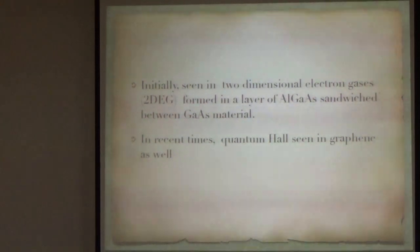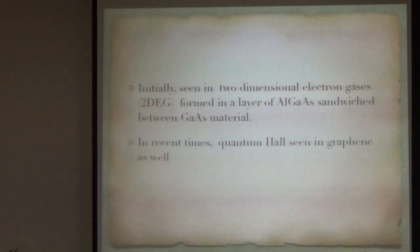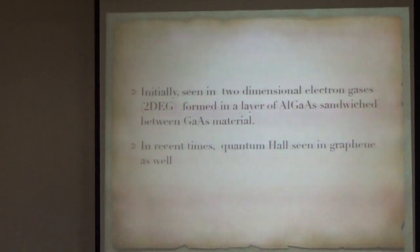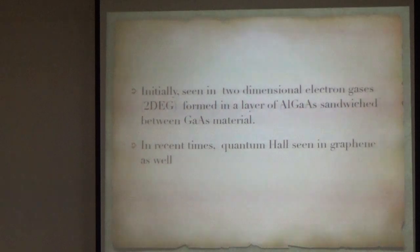This was initially seen in two-dimensional electron gases formed by a layer of aluminum gallium arsenide between layers of gallium arsenide. But in recent times, of course, quantum Hall is seen in graphene systems as well, and people here have worked on this quite a bit.